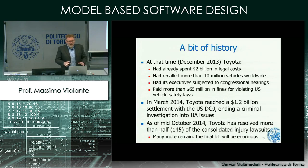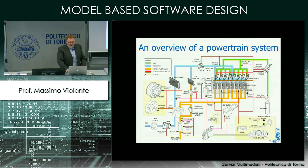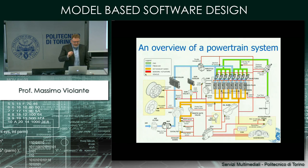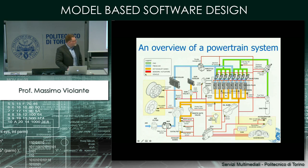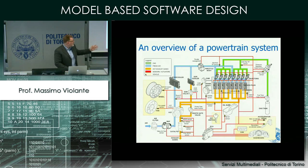Here I am showing you a slide not yet in your course material — I inserted it in the presentation but wasn't able to upload the new version yet. This new slide shows the overall architecture of a powertrain system and pinpoints where the electronic throttle control system lies. It is a natural gas powertrain architecture, but the principle doesn't make a big difference.